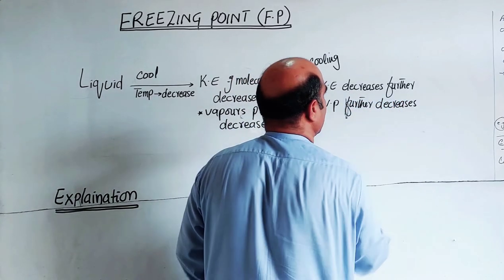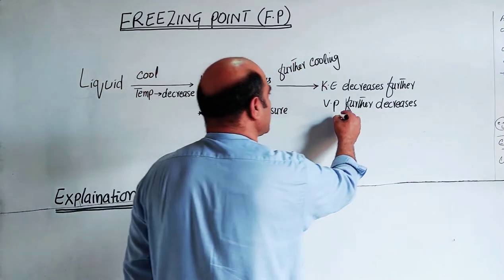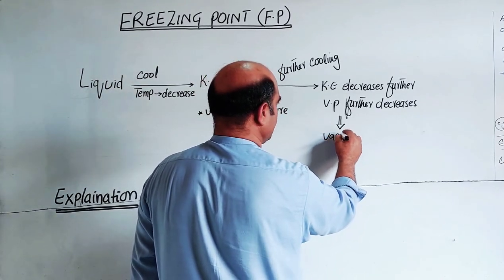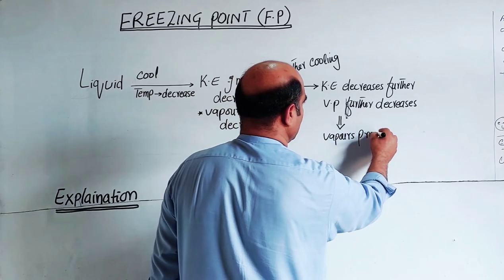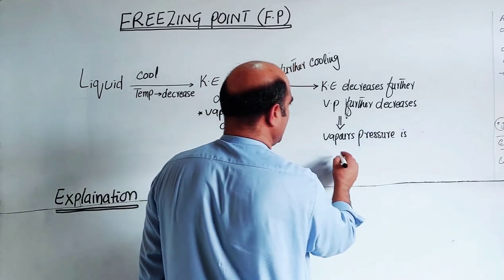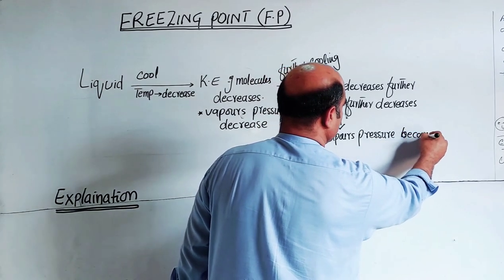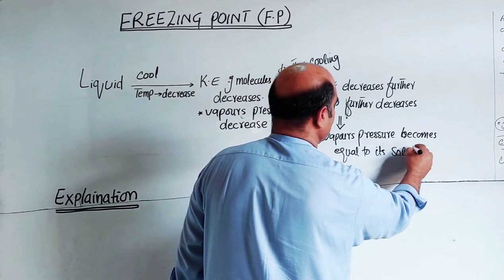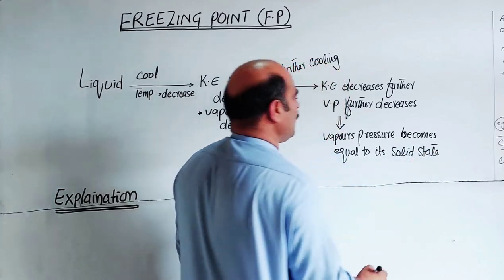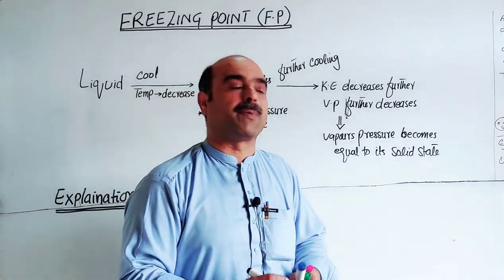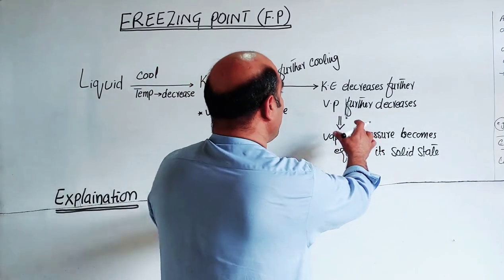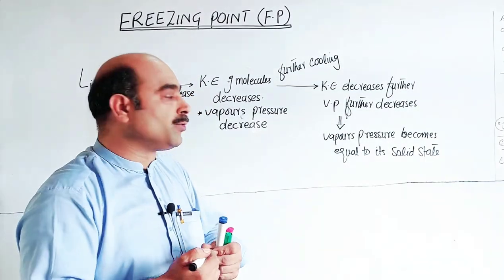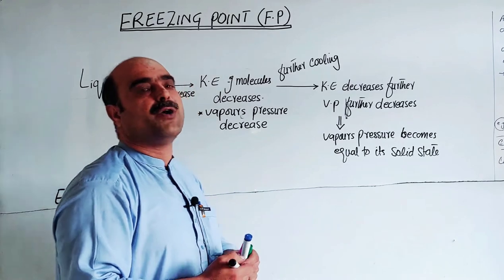The vapor pressure continues to decrease further until the vapor pressure of the liquid becomes equal to the vapor pressure of its solid state. When the vapor pressure of the liquid equals the vapor pressure of its solid state, that temperature is known as the freezing point of that liquid.